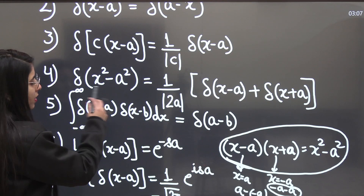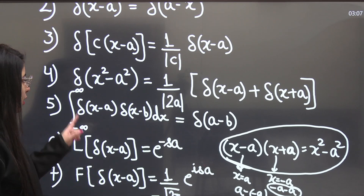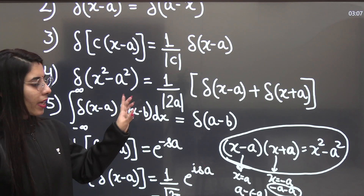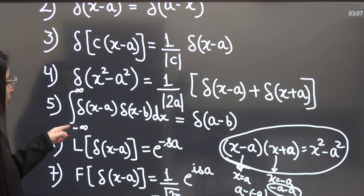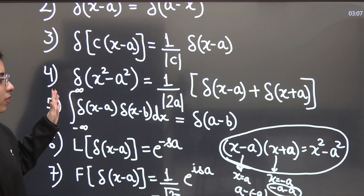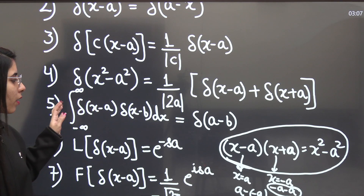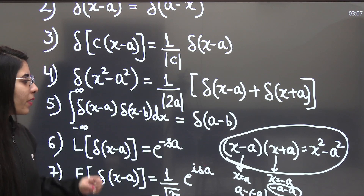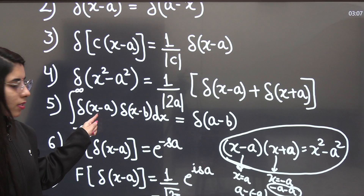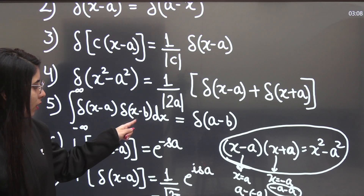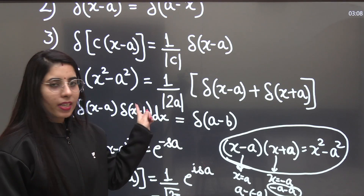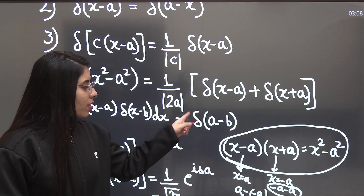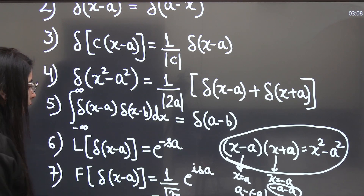If you have the expression — integration from minus infinity to plus infinity of δ(x−a) times δ(x−b) dx — you can simply write the result as δ(a−b). Equating the first delta's argument with 0 gives x = a; substituting into the second delta gives δ(a−b), which is your final expression.